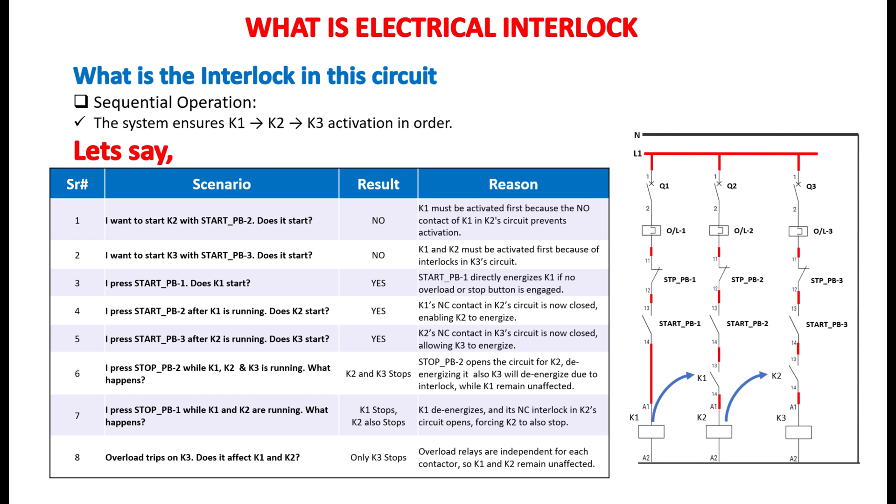Scenario 7. What if I press STOP PB1 while both K1 and K2 are running? In this case, K1 stops and K2 also stops. That's because stopping K1 opens its interlock in K2's circuit, cutting power to both.